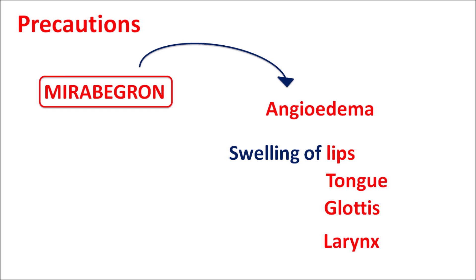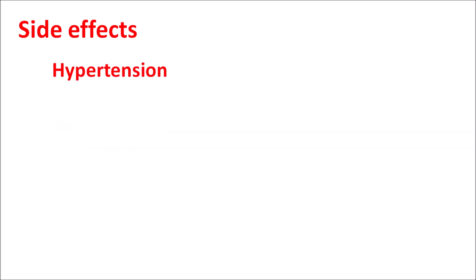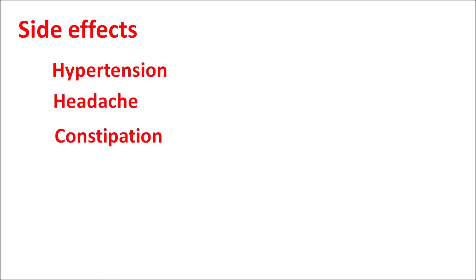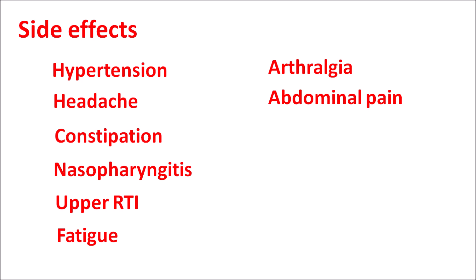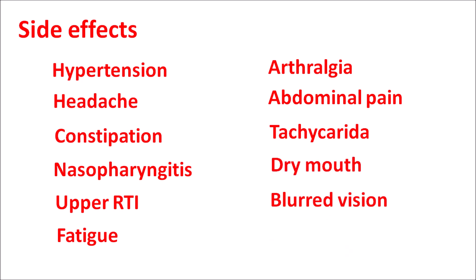Regarding side effects: hypertension is one important side effect of Mirabegron. It can also produce headache, constipation, nasopharyngitis, and upper respiratory tract infections. Fatigue, arthralgia (joint pain), and abdominal pain can also occur. Because this is a sympathomimetic, stimulation of the heart can increase heart rate, resulting in tachycardia.